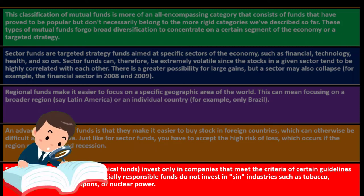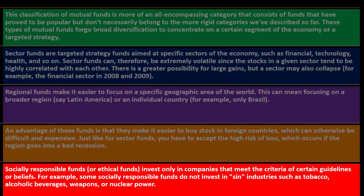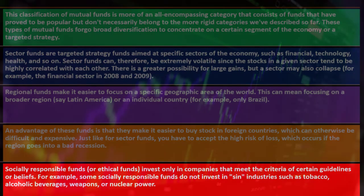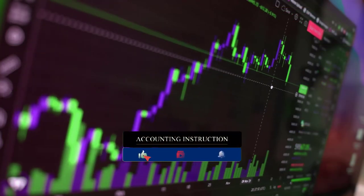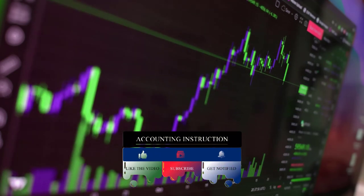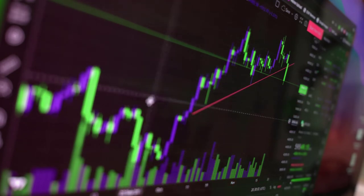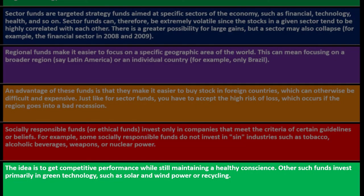Socially responsible funds, or ethical funds, invest only in companies that meet the criteria of certain guidelines or beliefs. For example, some socially responsible funds do not invest in 'sin industries' such as tobacco, alcohol, weapons, or nuclear power. These have become more popular in current times — investors may not want their mutual fund investing in things they personally oppose. The idea is to get competitive performance while still maintaining a healthy conscience. Other such funds invest primarily in green technology such as solar and wind power or recycling.